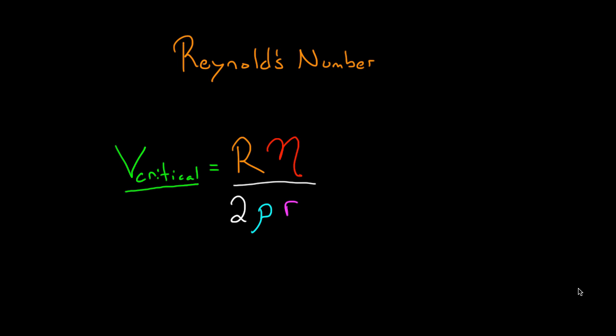Now if you measure the Reynolds number, to give you an idea, for blood, because this comes up a lot when you're talking about blood flow in the aorta, you might worry that there might be turbulence. For blood, the Reynolds number is around 2,000. And it's unitless. It has no dimensions. There's no units here. All the units cancel out.